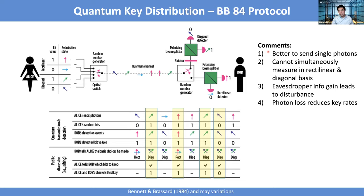It's important to send single photons, because if you send two or more, an eavesdropper can steal a photon and keep a copy. This protocol also uses the property that in quantum mechanics you cannot simultaneously measure in two complementary bases — you cannot simultaneously measure position and momentum, and here you cannot measure in both horizontal/vertical and plus/minus 45-degree bases simultaneously. More fundamentally, because of no-cloning, Eve cannot make a copy of an unknown state without changing it, which excludes the possibility of eavesdropping and ensures security.